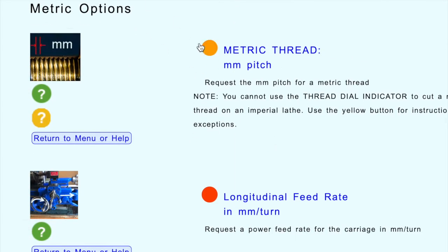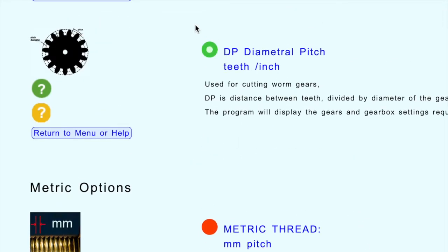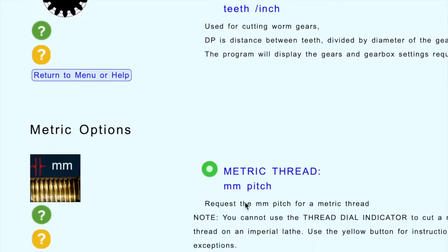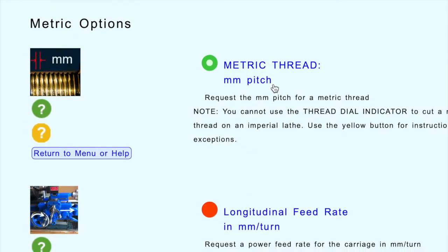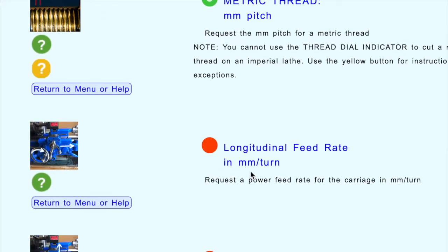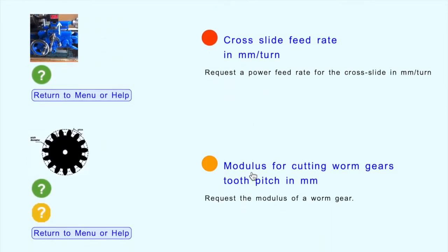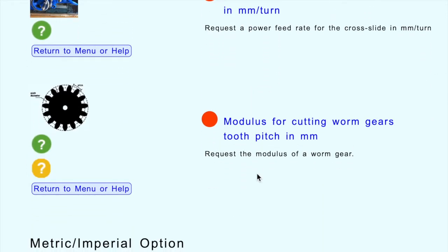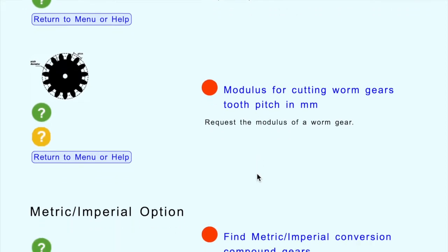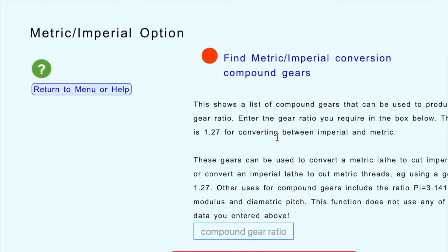Then we come to a completely separate metric options section - though you can only choose one of these at a time. You could choose a metric thread with millimeters pitch, a longitudinal feed rate in millimeters per turn, cross slide feed rate in millimeters per turn, or modulus of the gears, which is a metric way of measuring gear teeth. There's also a metric-imperial option to calculate gear ratios or compound gears used to convert between metric and imperial.